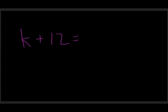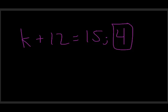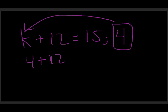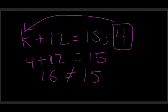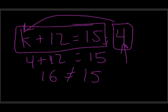One final thing your homework will ask: it'll give you an equation like k plus 12 equals 15, then a semicolon and a number — for example 4 — asking if that's a solution for k. All you do is plug in their suggested solution to check. 4 plus 12 is 16, which does not equal 15, so the answer is no. That's solving equations involving addition and subtraction — see you next time.